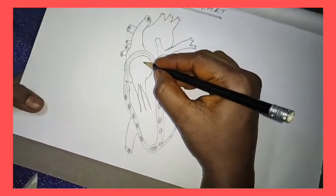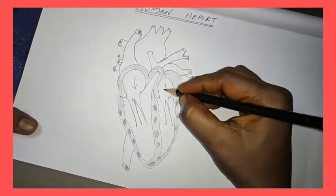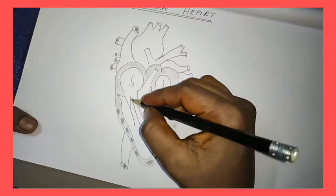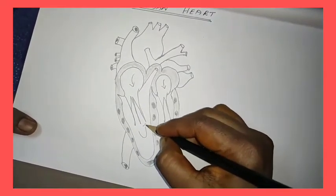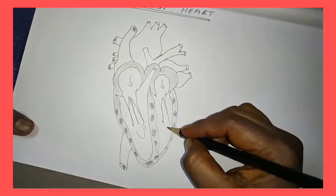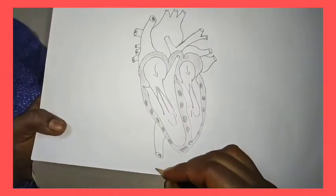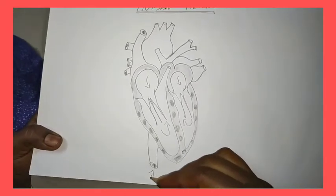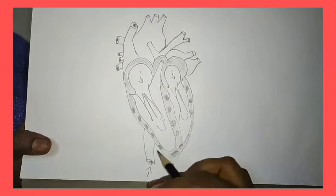See, atrium gives blood to ventricle, so make inside arrow. Ventricle gets blood from atrium. So look like this. Here inside blood will go, so arrow inside. One more. Blood will go.